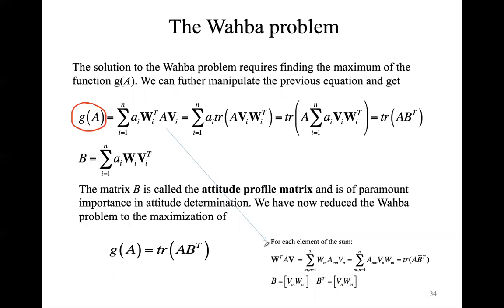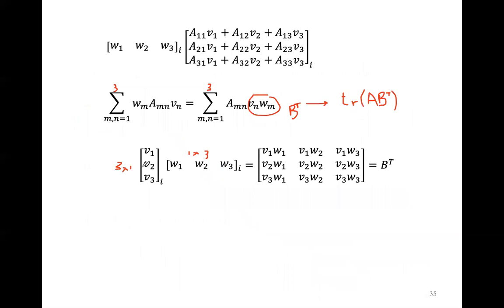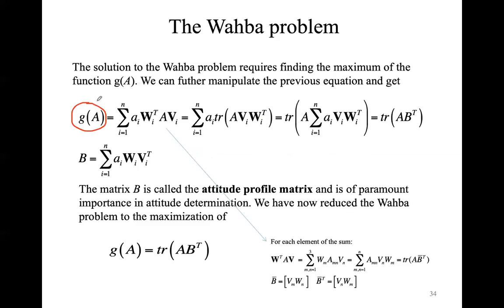This G(A) is what we want to maximize in order to minimize the cost function and minimize errors between observed and known orientations. G(A) is a function of what is called the attitude profile matrix. By further manipulating the matrix form of these sums, we find that G(A) equals the trace of a matrix that is the product of the attitude matrix and the transpose of the attitude profile matrix. The attitude profile matrix is the product of the vector in the ICRF and the vector in the OBF.